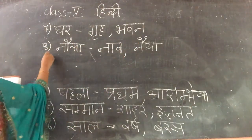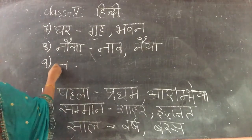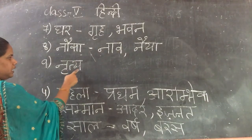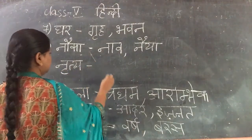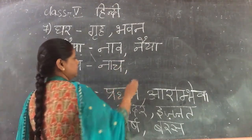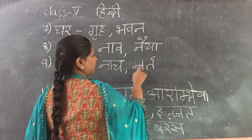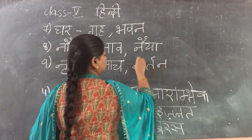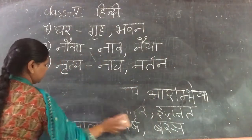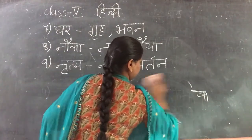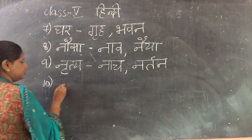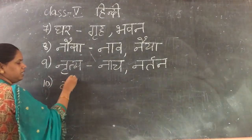Ninth one: Nritya means Dance. Dance is also known as Naaj and Nartan. Nritya — Naaj — Nartan. Next: Vyanjan.